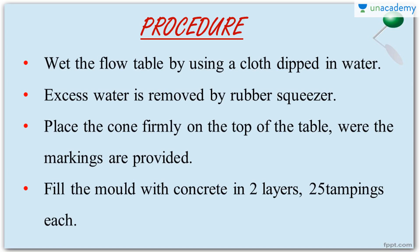The procedure is very simple. First, wet the flow table using a cloth dipped in water. There should be no excess water — remove it with a rubber squeezer, which will help squeeze out excess water from the surface. Now, place the cone or mold firmly on top of the table on the crosshair markings at the center. Be careful to place the mold exactly on the markings, otherwise it may shift.